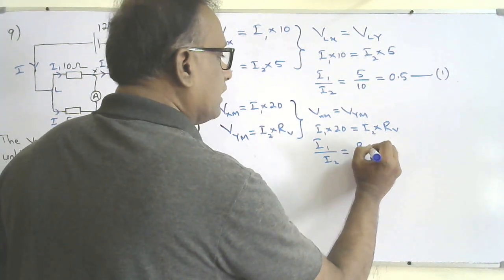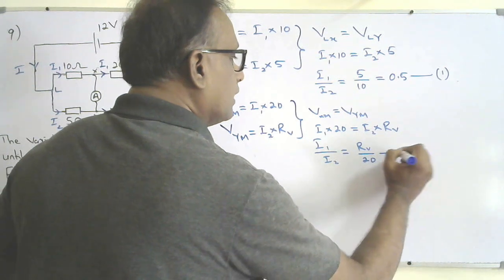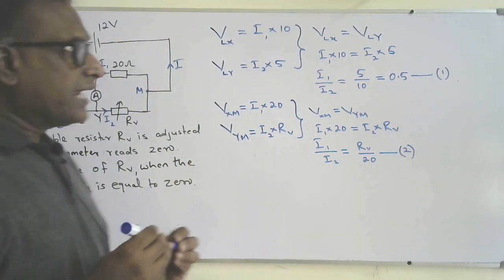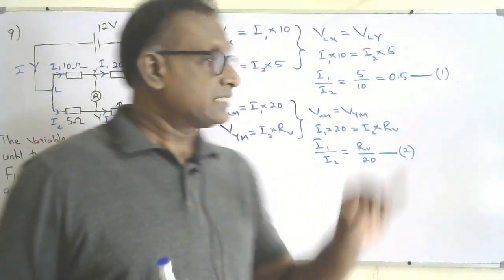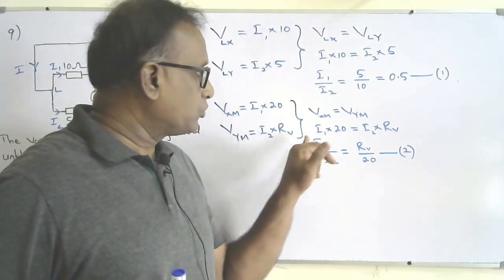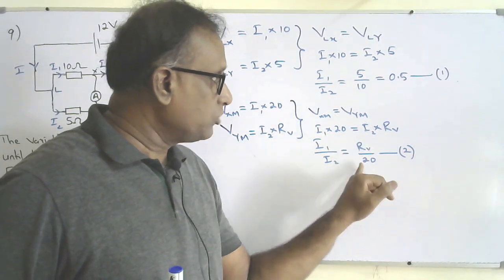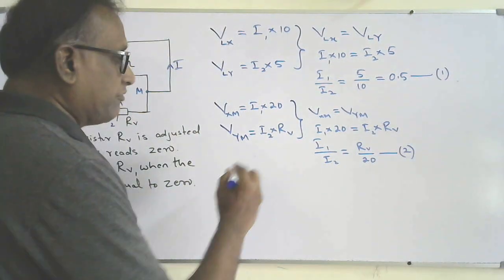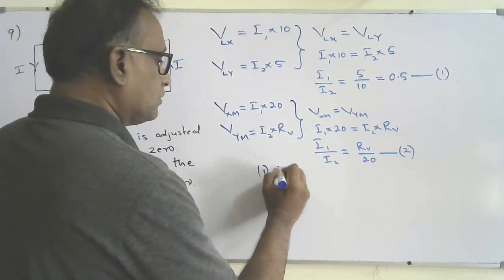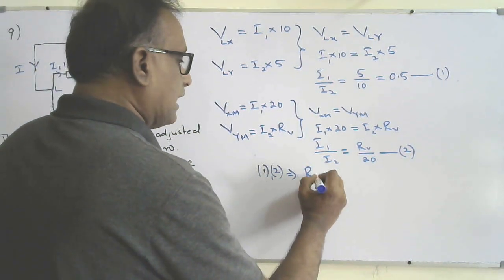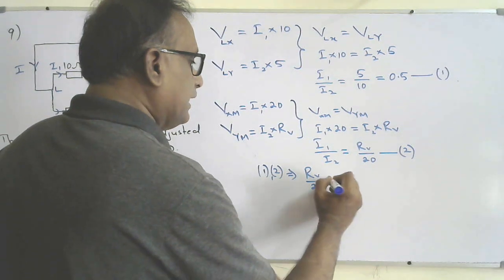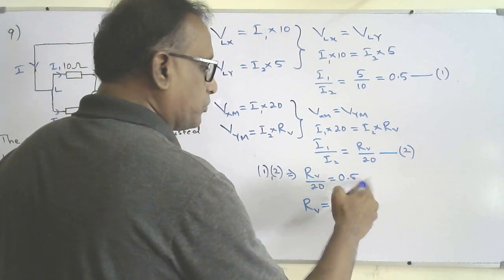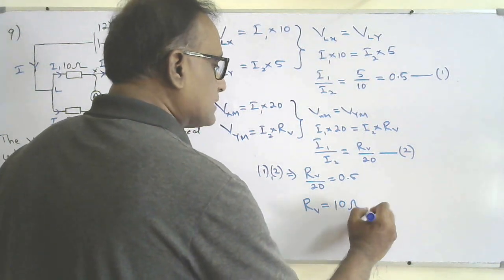The left side of both equations is the same: i1 over i2. Therefore the right sides must be equal: Rv over 20 equals 0.5. So Rv equals 20 times 0.5, which is 10 ohms. That's the answer.